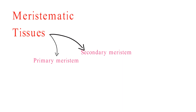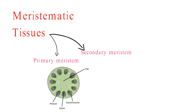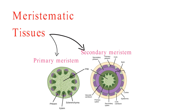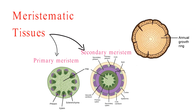Primary meristems lay the foundation for primary tissues, while secondary meristems step in to create secondary growth. Did you know that the rings in tree trunks are a result of secondary growth by the vascular cambium? Counting these rings can reveal the age of a tree.